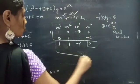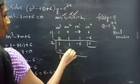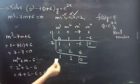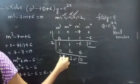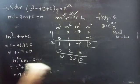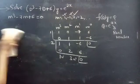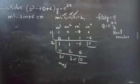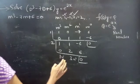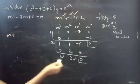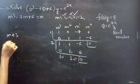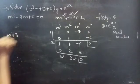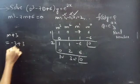Performing synthetic division for m = 2: 2 × 1 = 2, 1 + 2 = 3, 2 × 3 = 6, -6 + 6 = 0. This gives us a degree-1 polynomial, yielding the factor m + 3. So m = -3 satisfies, since -3 + 3 = 0.